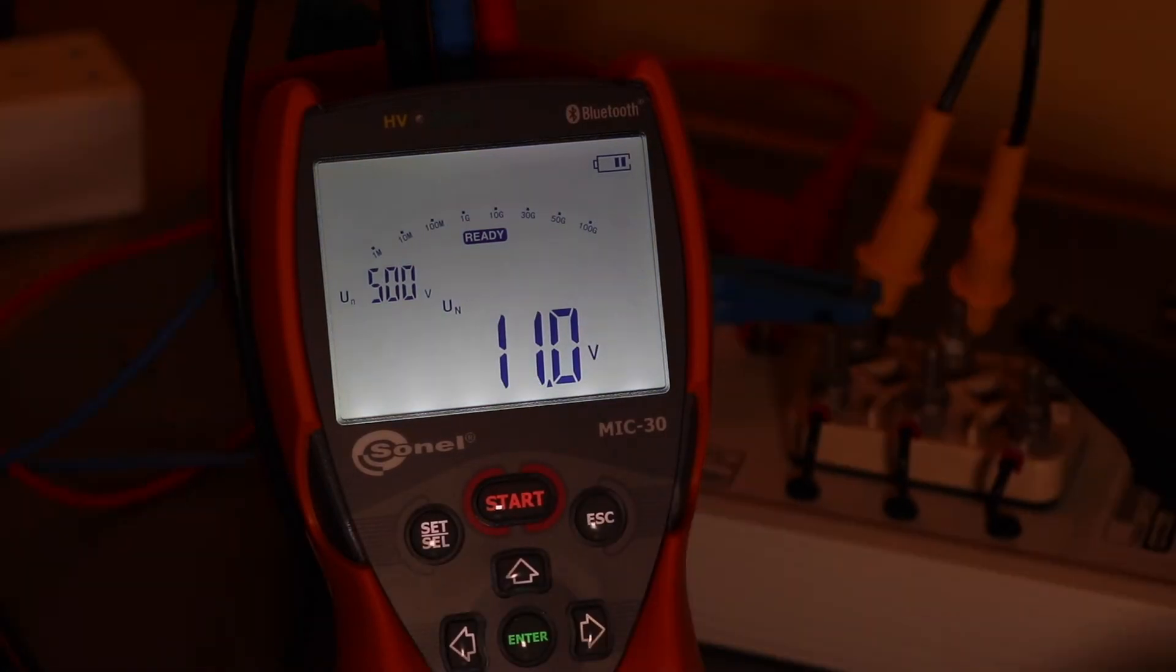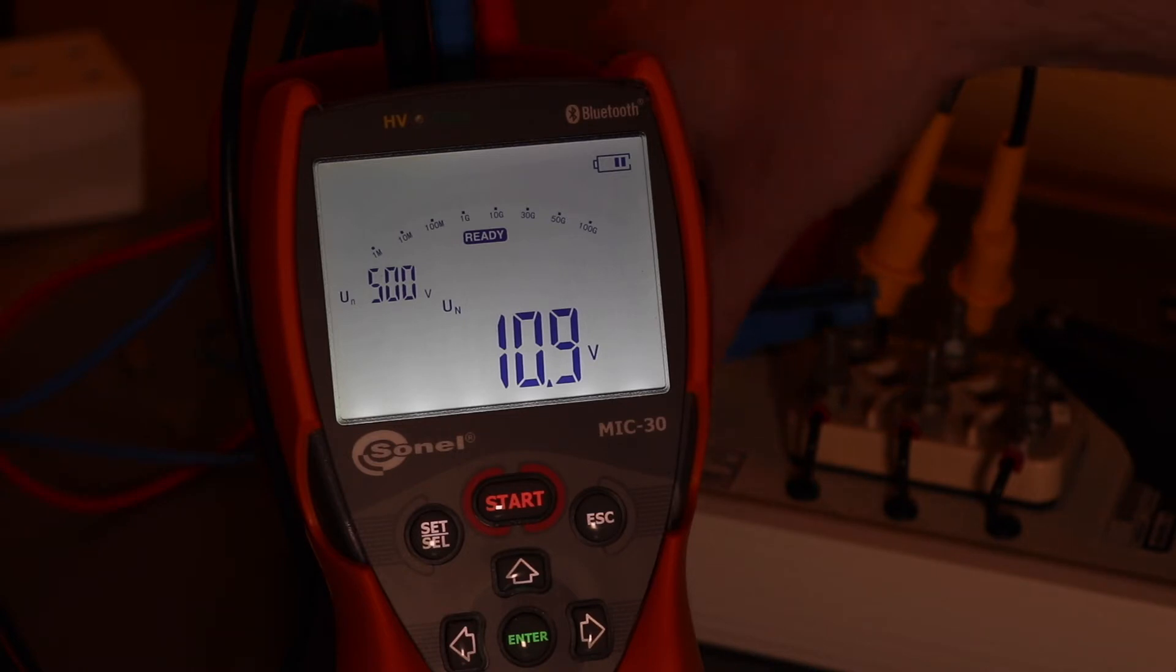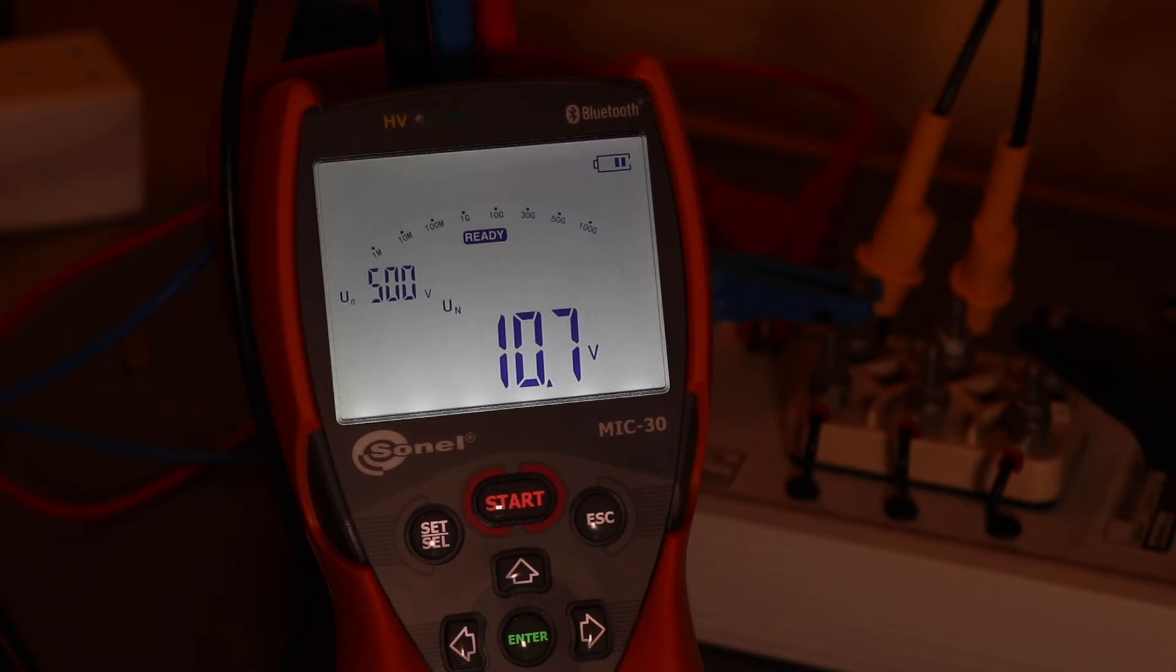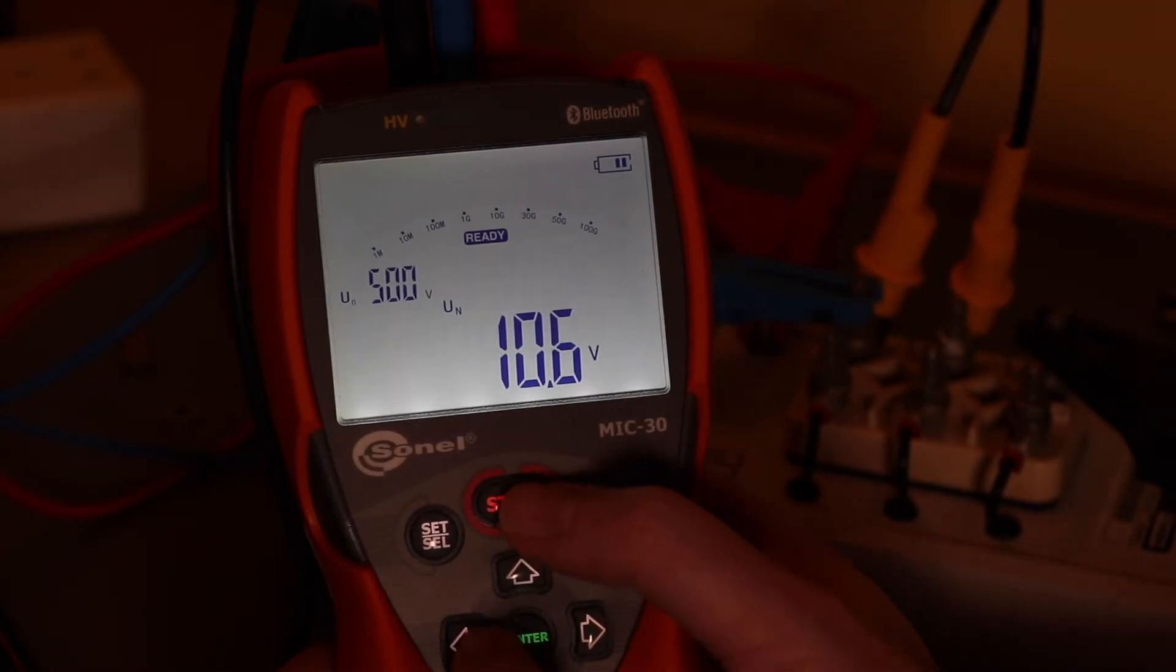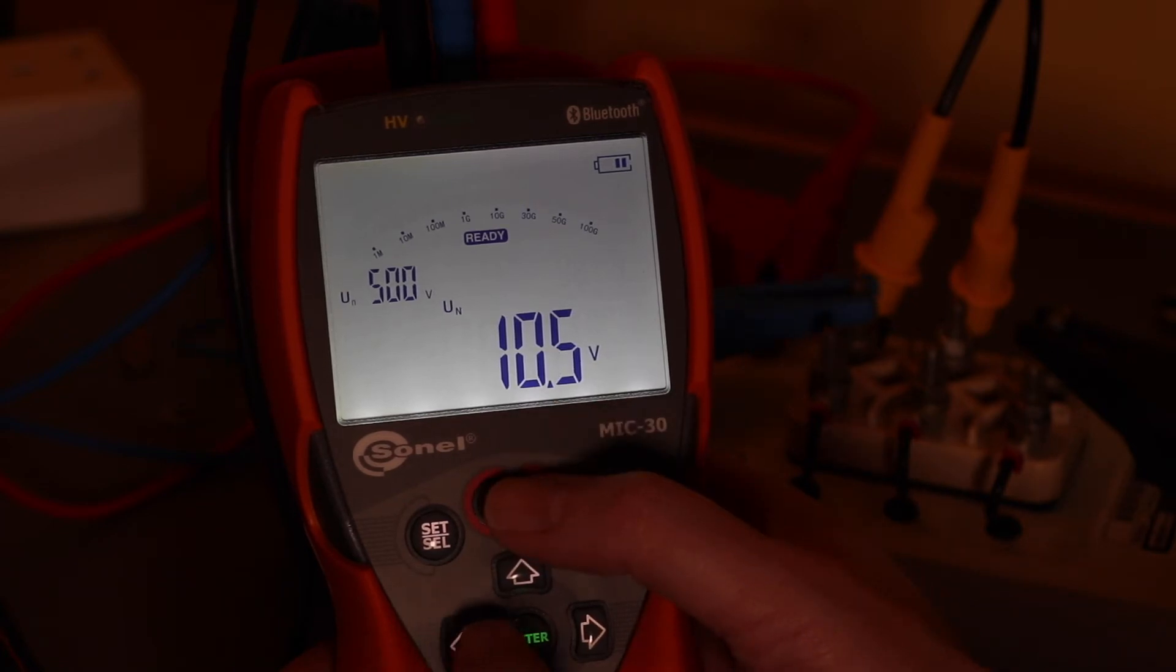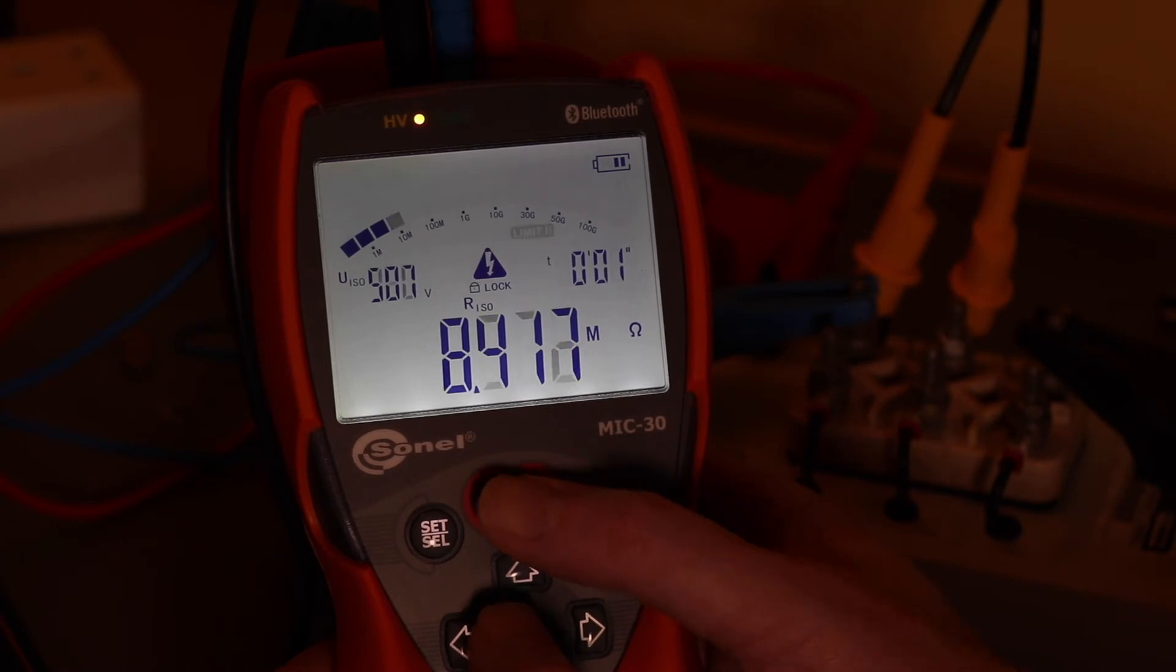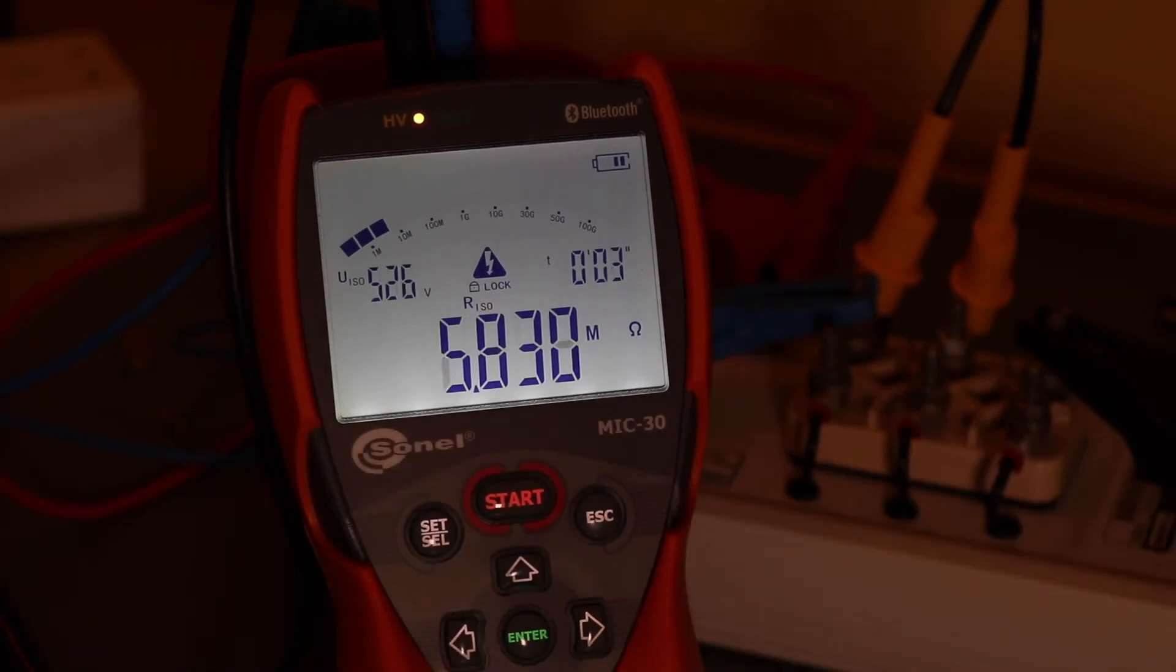This test setup now is using the guard terminal onto the two untested phases and just testing the U phase out. And we'll do this for another one minute test again. And hopefully you'll be able to see the difference in the results. So start here. Lock him on. And we wait for another minute.